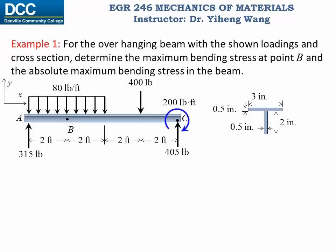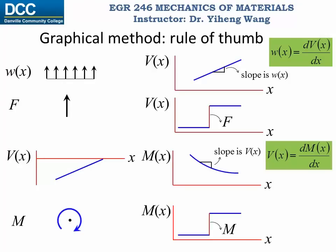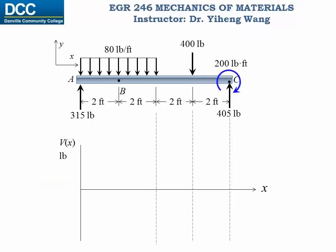For the second part — the absolute maximum bending stress in the beam — we first sketch the shear and bending moment diagrams to visualize where the absolute maximum bending moment occurs. Recall the graphical method: load intensity is the slope of the shear force function, and shear force is the slope of the bending moment function. A concentrated force produces a jump in the shear diagram; an external couple produces a jump in the moment diagram. Following these rules, we sketch the shear force diagram through concentrated forces, constant negative load intensity, and zero load intensity regions, returning to zero with the final concentrated force.